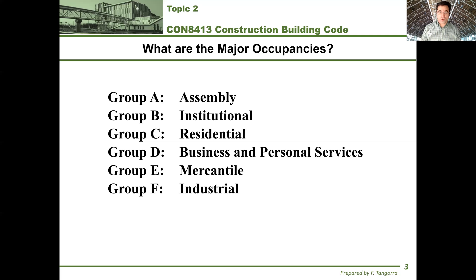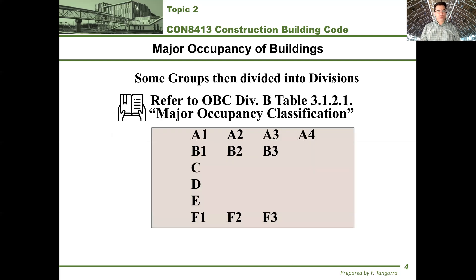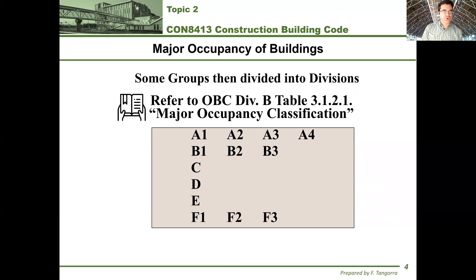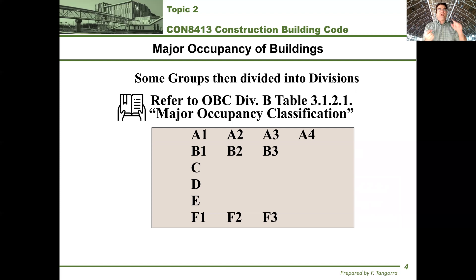The groups of these major occupancies are shown in Table 3.1.2.1. Pause this video and go find this under Division B, Table 3.1.2.1. As you can see in this table, some of the six groups are furthermore divided into so-called divisions. For example, Group A is furthermore divided into Divisions 1, 2, 3, and 4 — written as A1, A2, A3, A4.